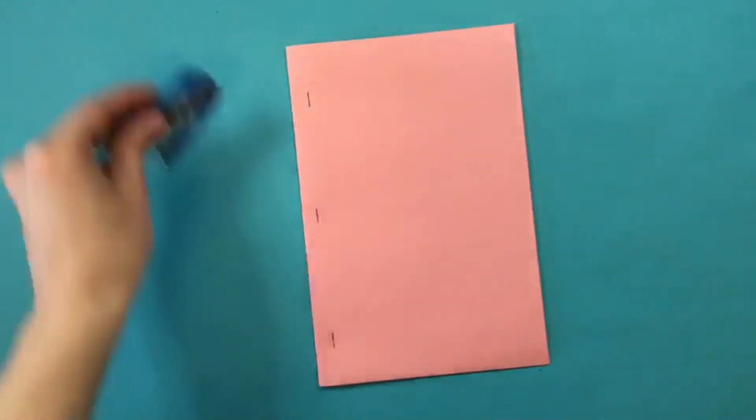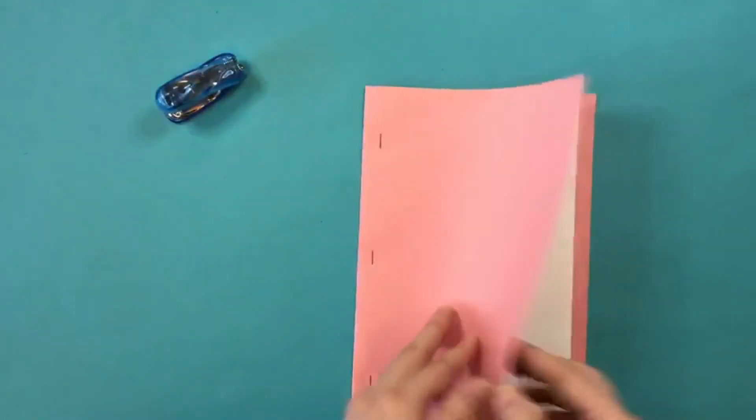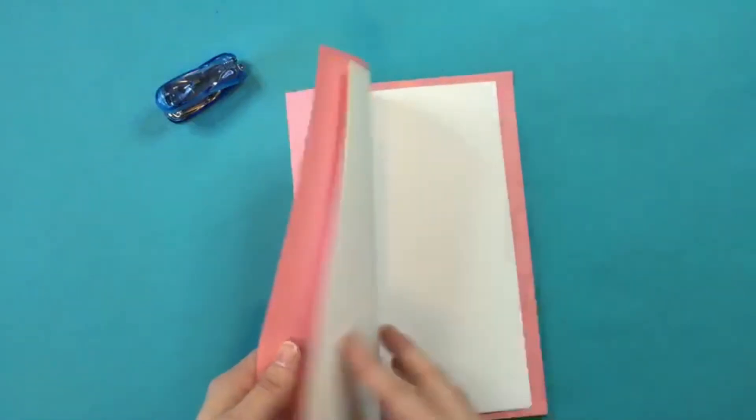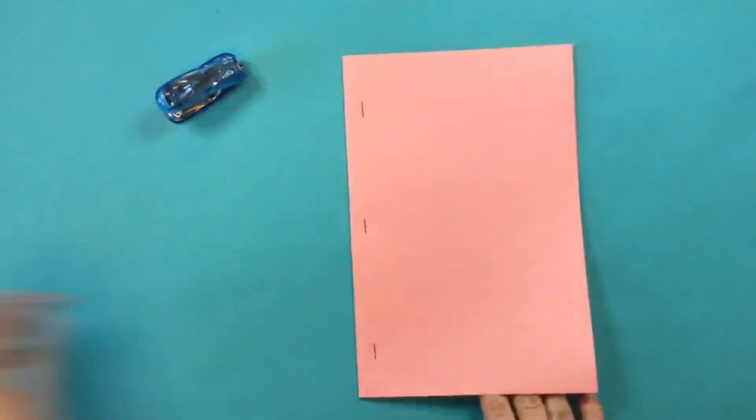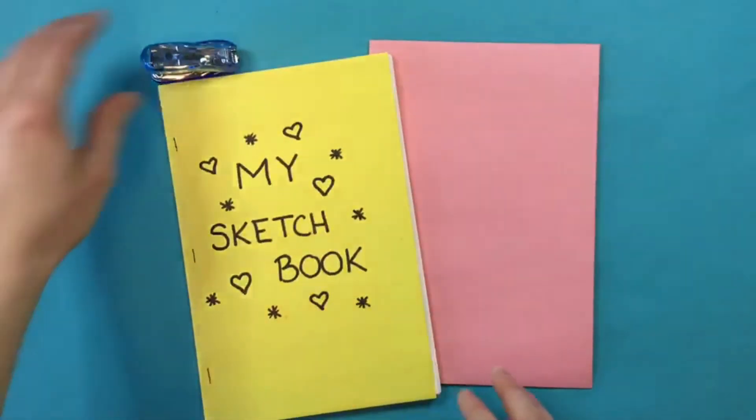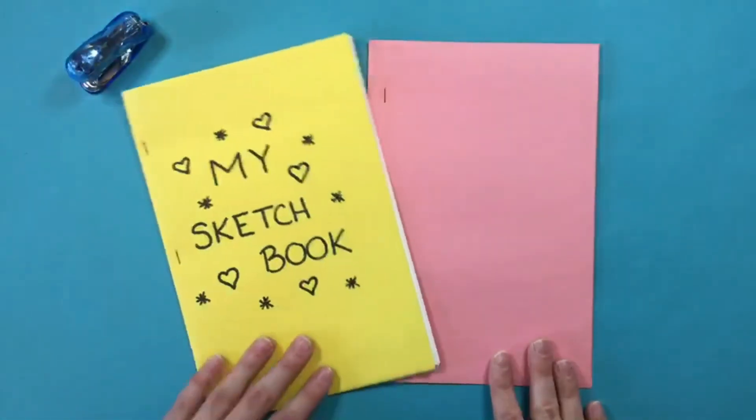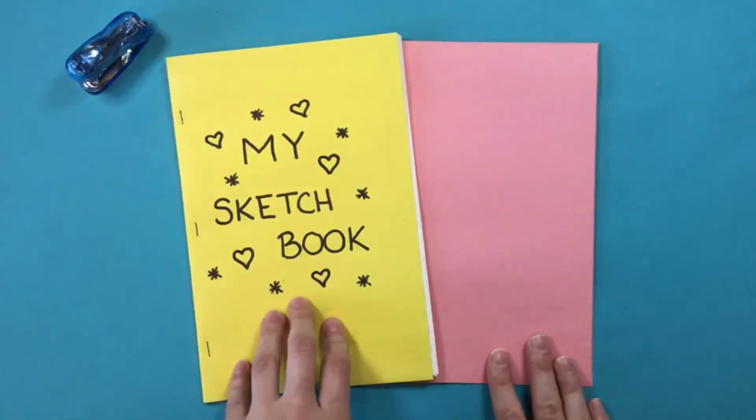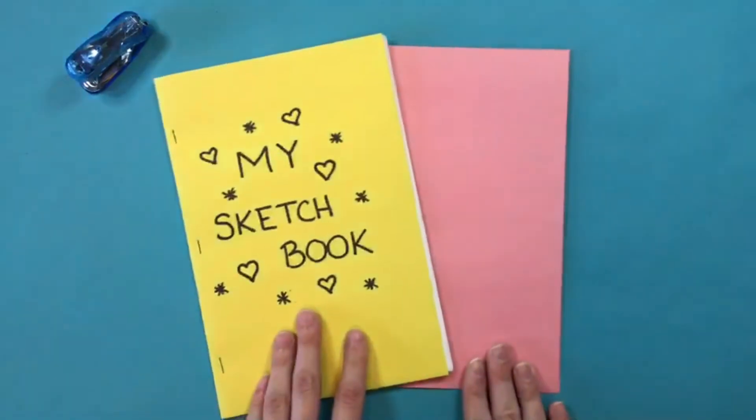Once you have your paper stapled, then your sketchbook is complete and all of the white pages or lined papers are all inside. You can even add a cover if you're interested in decorating the front of your sketchbook. You could add your name or some designs.